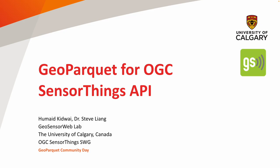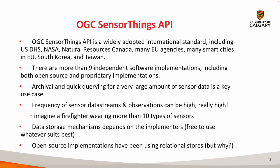SensorThings API has been around for some time — it was officially released in 2016. The problem it was trying to solve is the semantic interoperability of IoT sensor data. When you've got a ton of different sensors and have to integrate all that data, each with their own format, it's really hard as an applications developer. A sensor could be reporting the same data in Celsius or Fahrenheit, and you have to merge all of that.